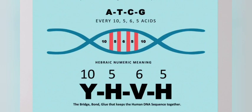At the base of our DNA, we have four main amino acids: A, T, C, G — adenine, thymine, cysticine, and guaninine.